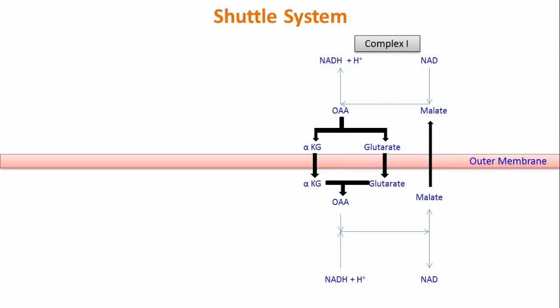The NADH produced inside the mitochondrial matrix from this shuttle then enters complex 1 of the electron transport chain to carry forward oxidative phosphorylation.